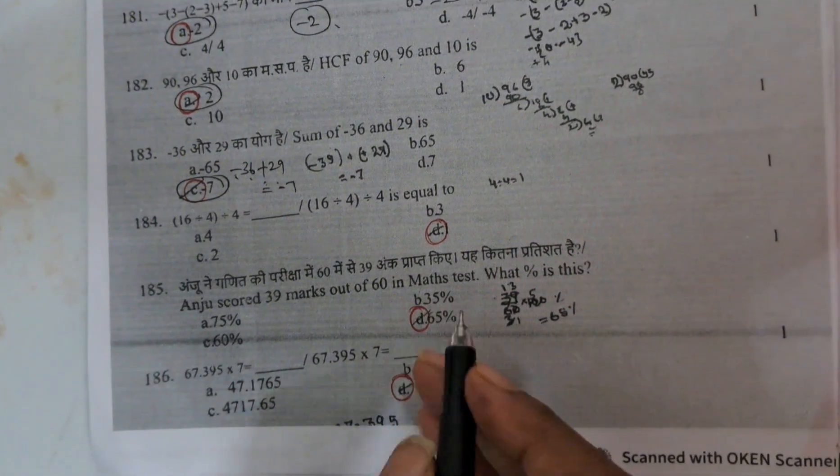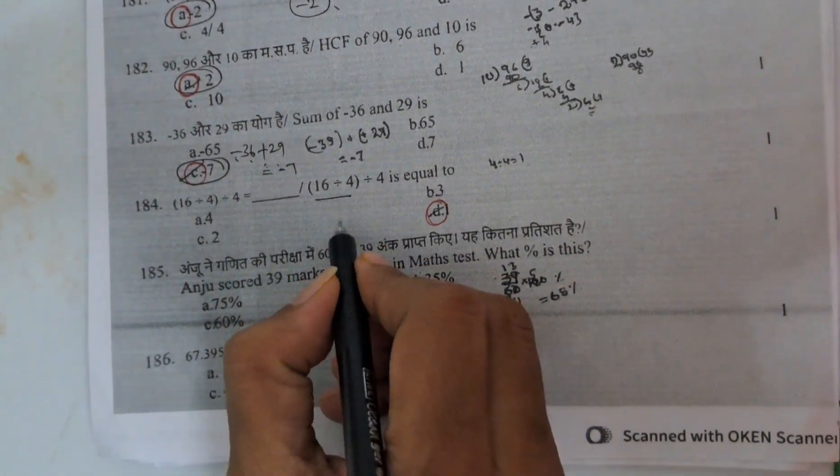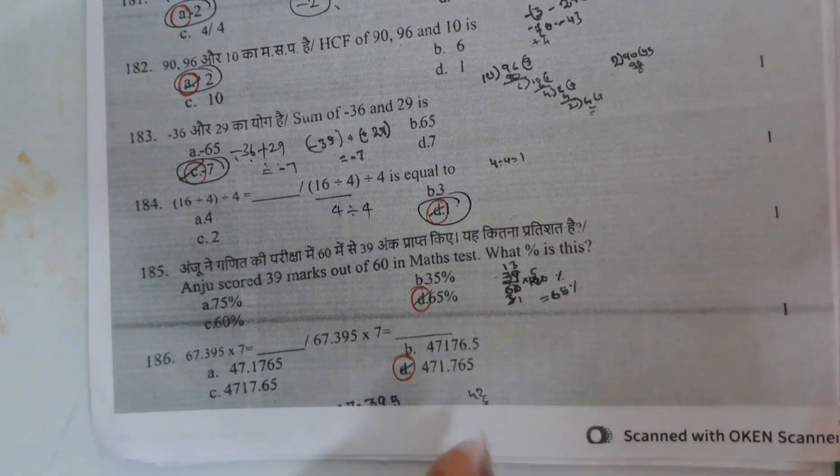Here, it is simplification. 16 divided by 4 is 4. 4 divided by 4 is 1. Answer is D.